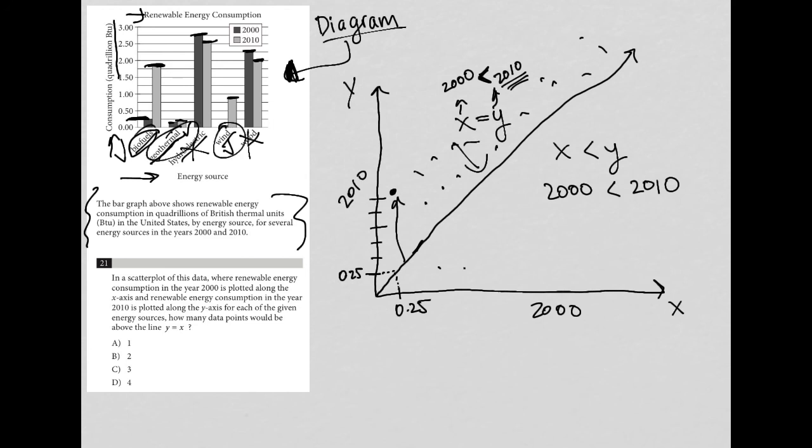So we have wind that works for us, geothermal, and biofuels. We have three data points that would be above y equals x, so choice C is the best answer.